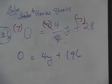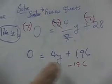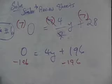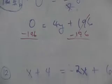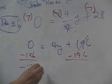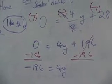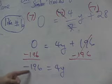So both sides, what do we do? Subtract that 196. Subtract 196. So that cancels. What are we left with on both sides? Negative 196. That's what I thought you said. Good job. Because zero minus 196 is negative 196.